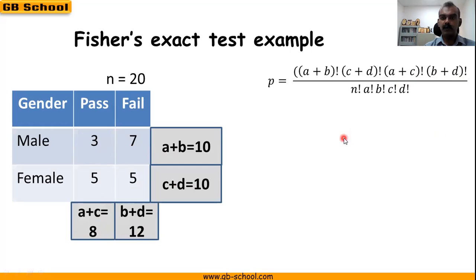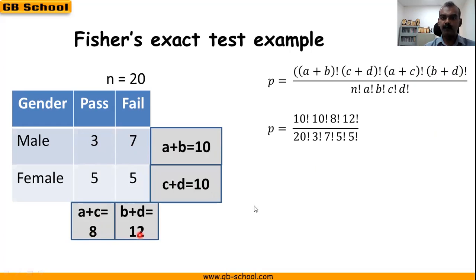Then we use these values in the formula. We get 10! × 10! × 8! × 12! divided by 20! × 3! × 7! × 5! × 5!.